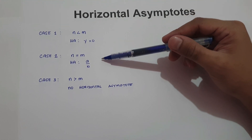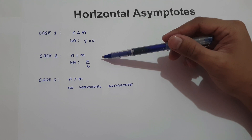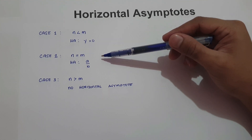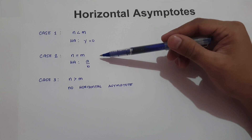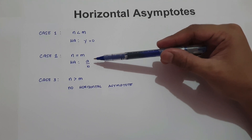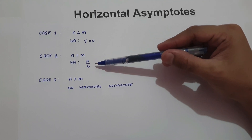In case number two, if the degree of the numerator and the denominator are equal, the horizontal asymptote is the ratio of the leading coefficients — that is a over b.